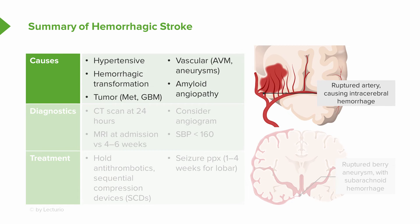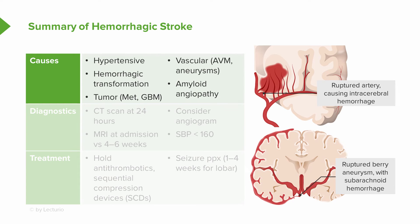There are two basic types of hemorrhagic stroke: intracerebral or intraparenchymal hemorrhage and subarachnoid hemorrhage. Hypertensive hemorrhage, hemorrhagic transformation of stroke, tumors, and amyloid angiopathy all present with intraparenchymal or intracerebral hemorrhage. Aneurysms are the etiology that really presents with subarachnoid hemorrhage.